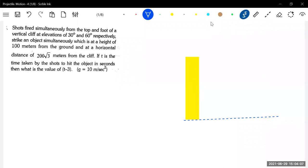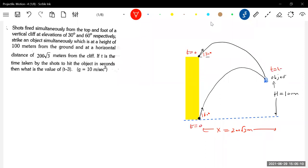Shots are fired simultaneously from the top and foot of a vertical cliff, striking an object which is at a height of 100 meters from the ground. The elevation is 30 degrees. If T is the time taken by the shots to hit the object in T seconds, so at T equals zero I projected, and after some time T they are here. That's all.